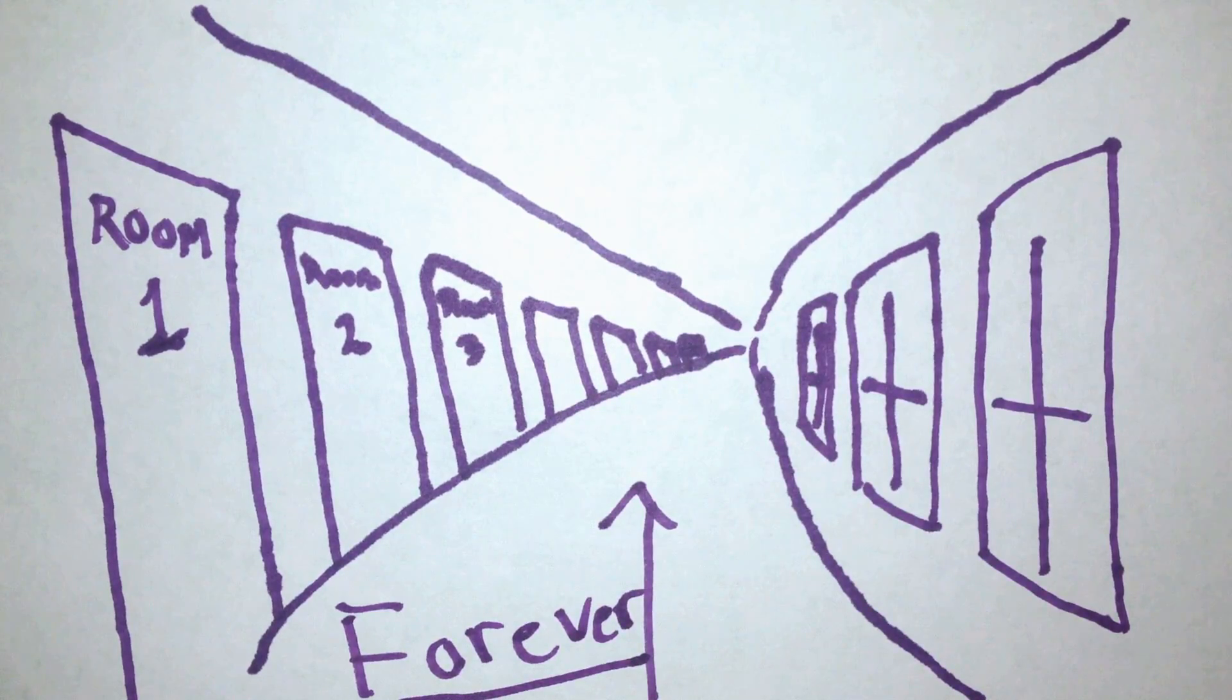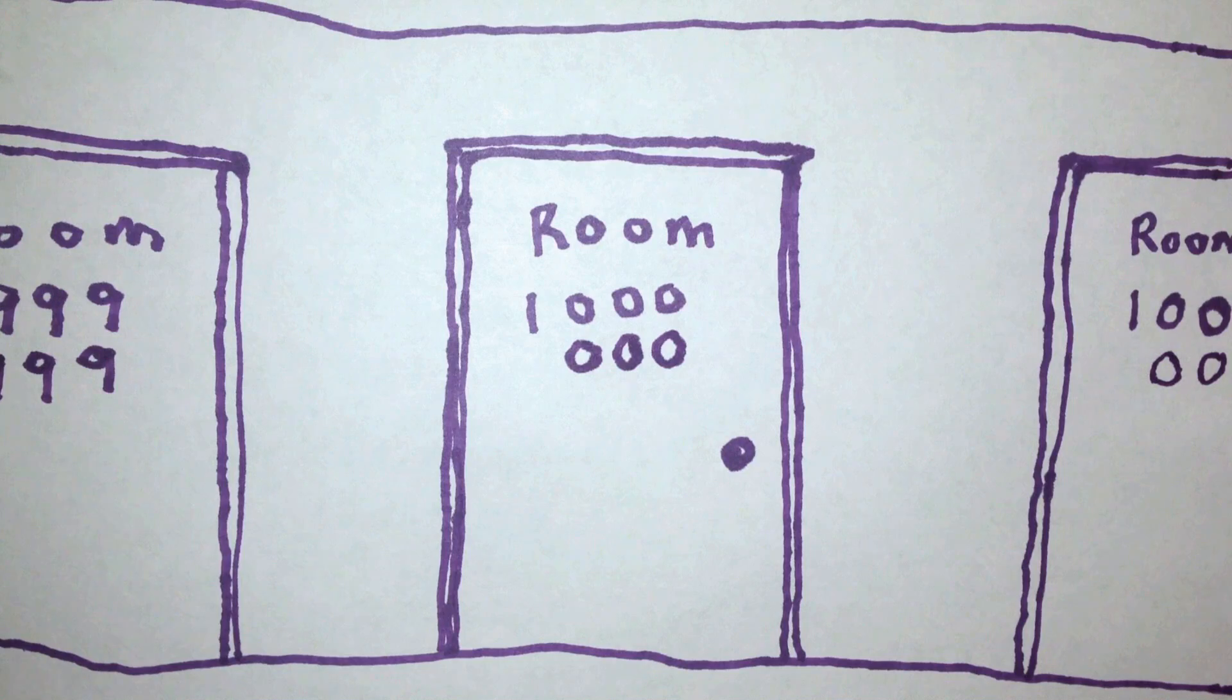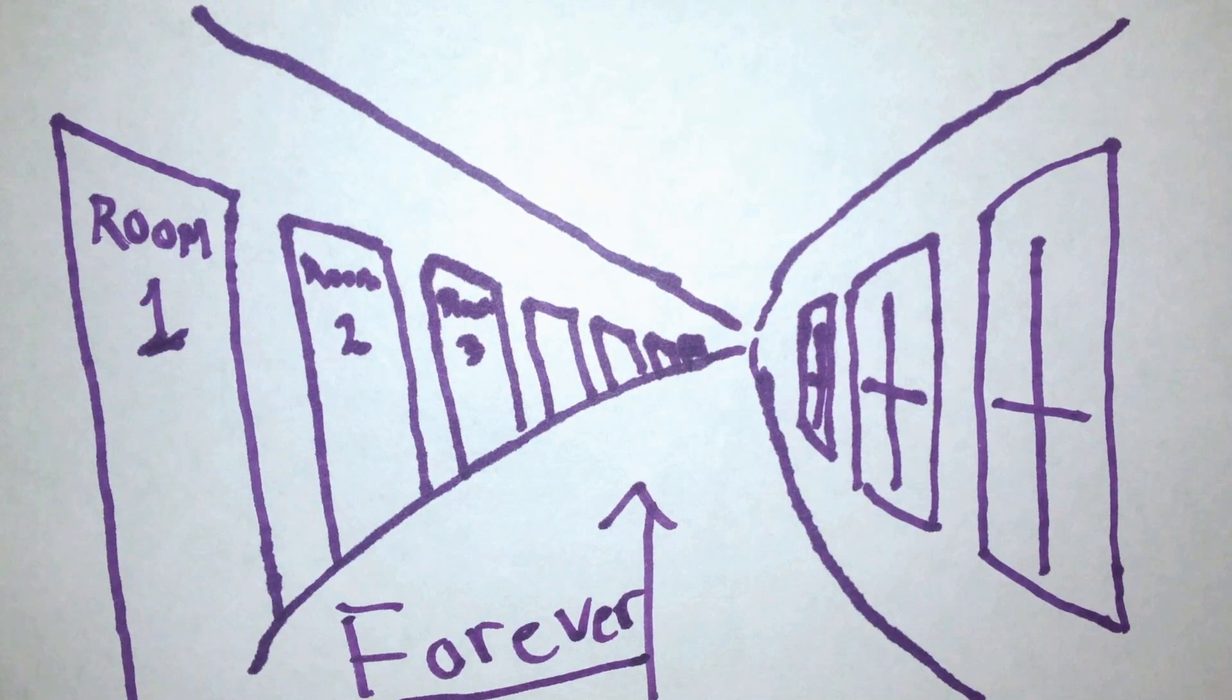The thousandth door on your left is room one thousand. The millionth door on your left is room one million. For every positive integer, there's a room labeled by that number, and the rooms are arranged in order in this endless hallway.